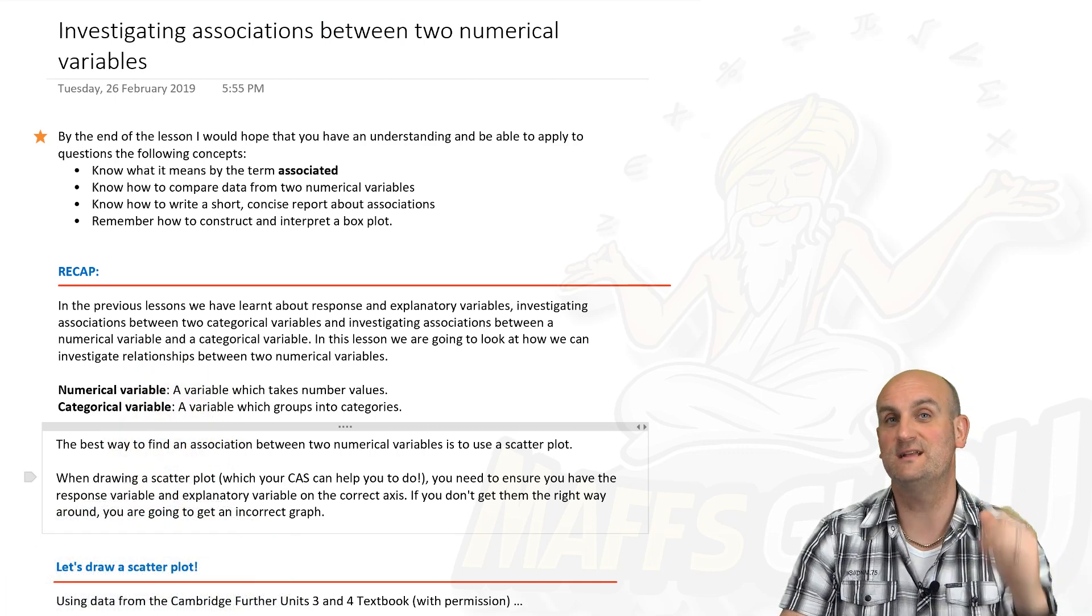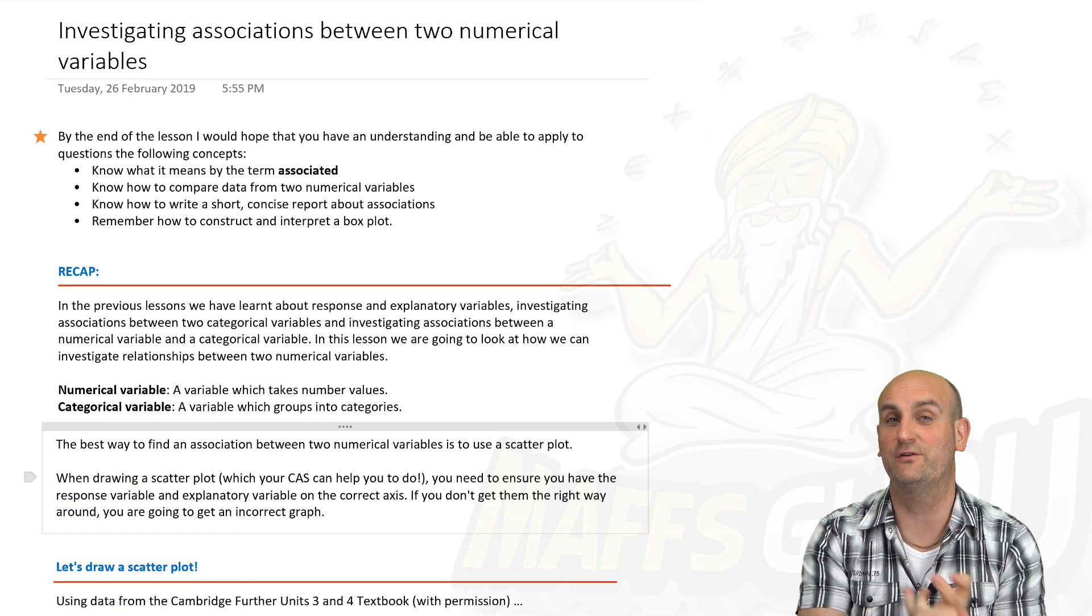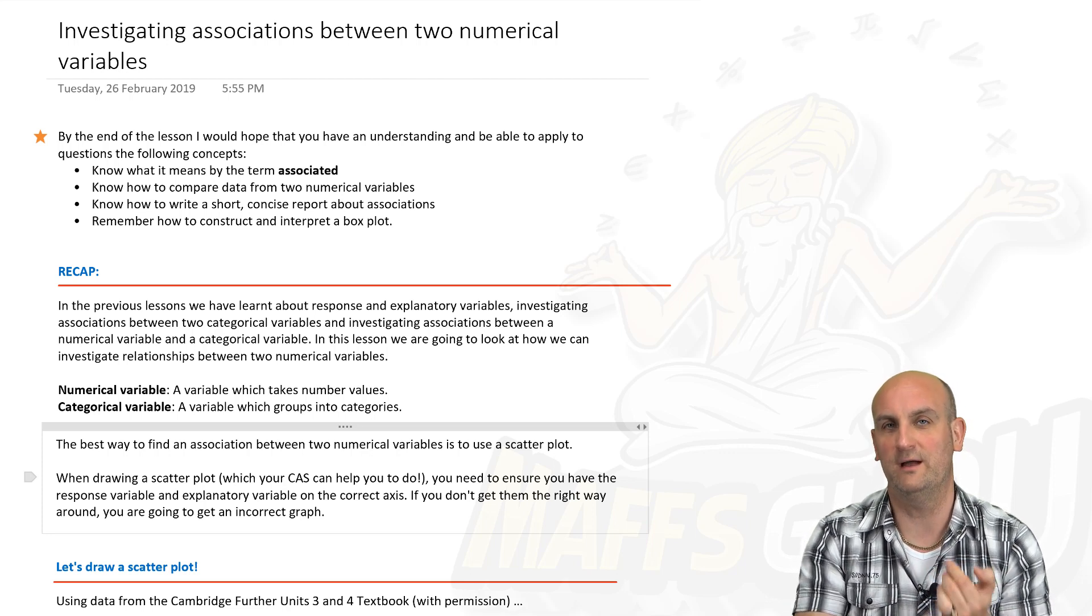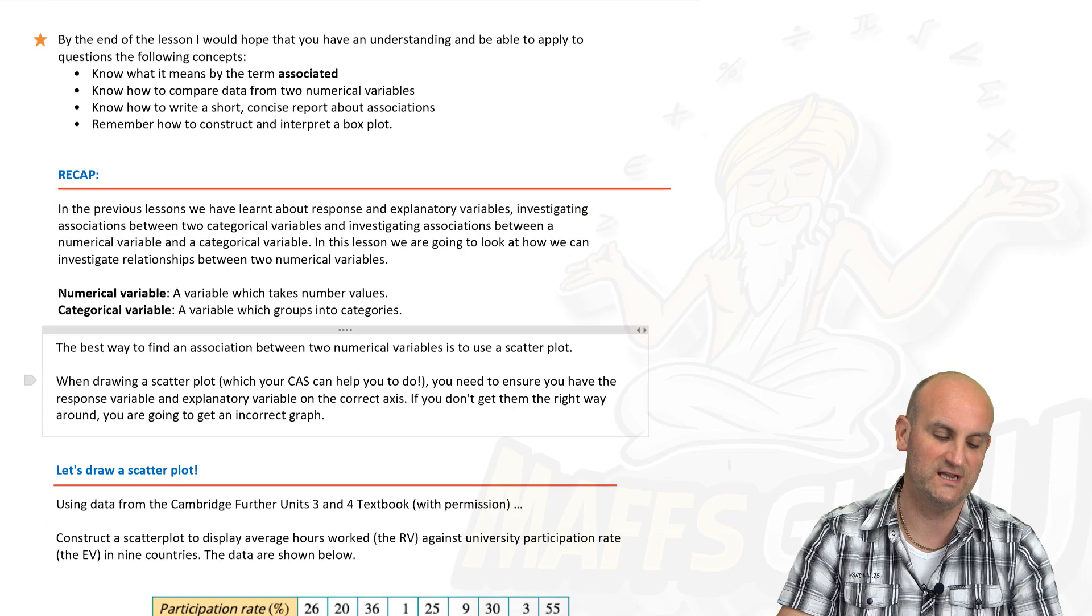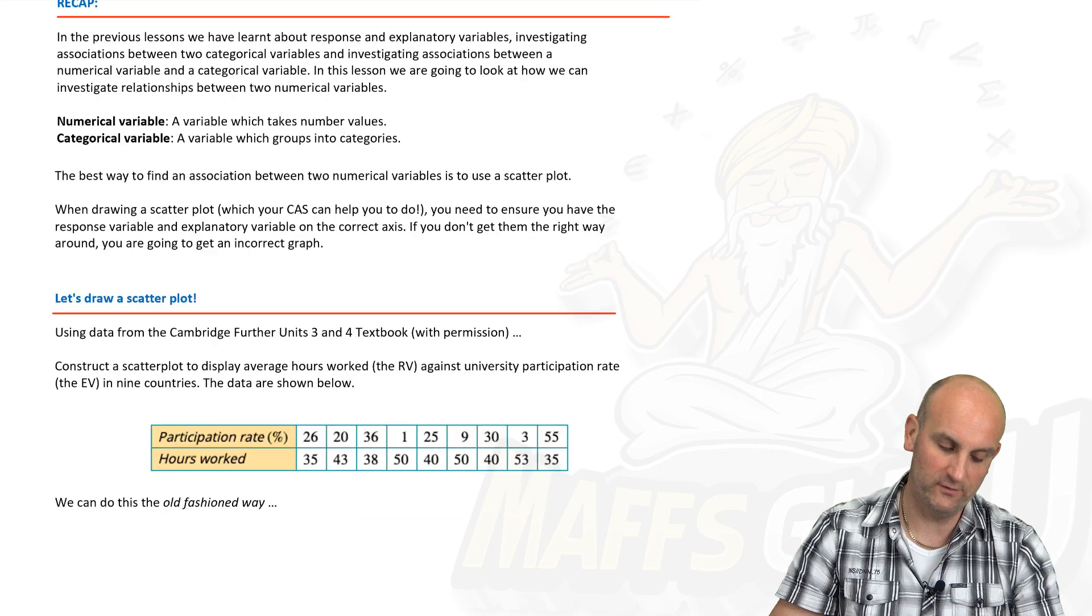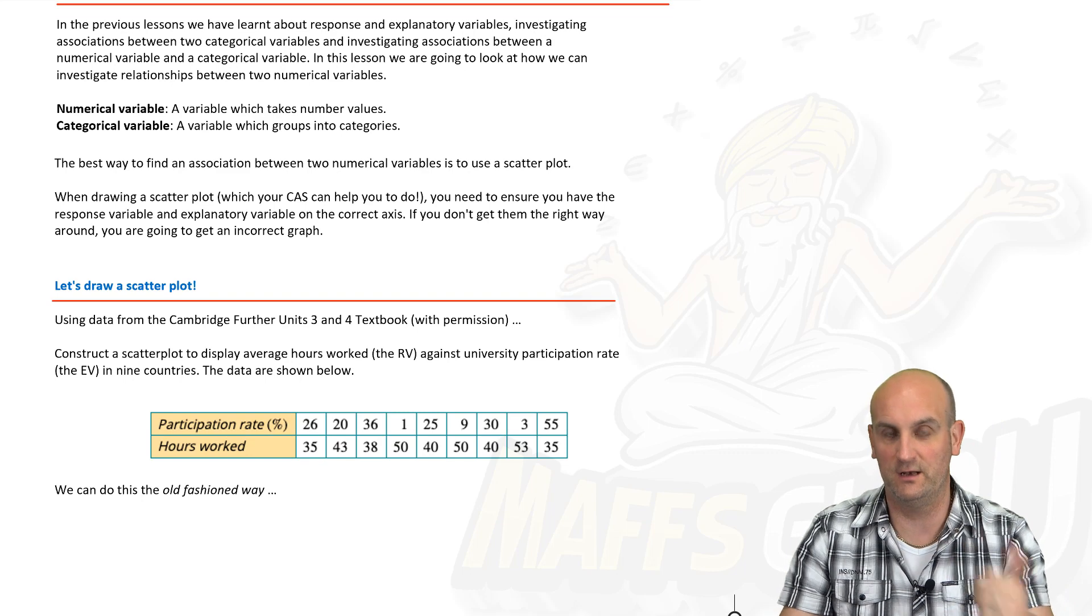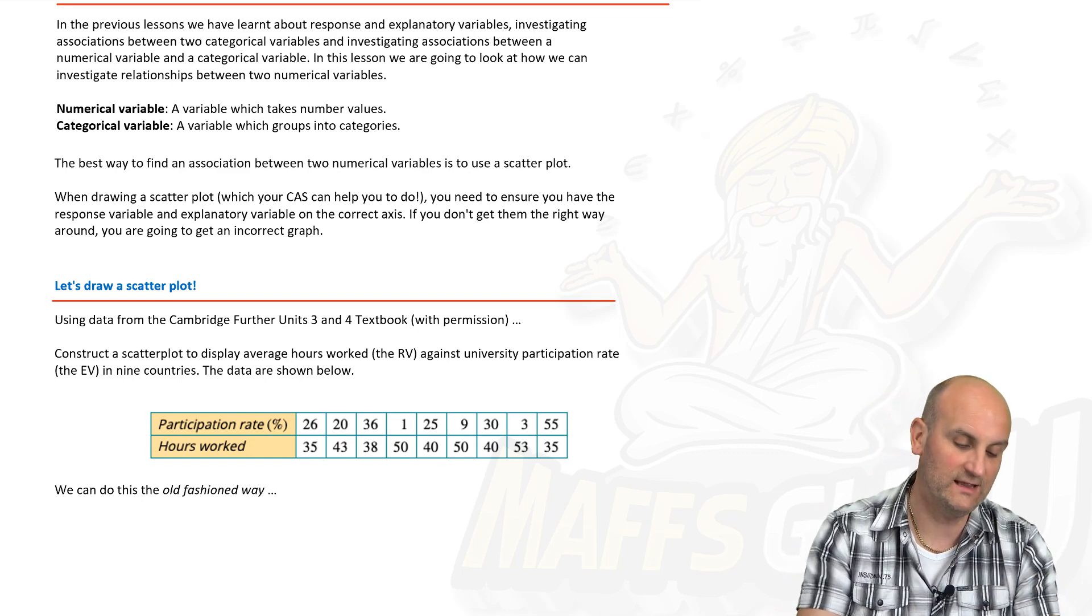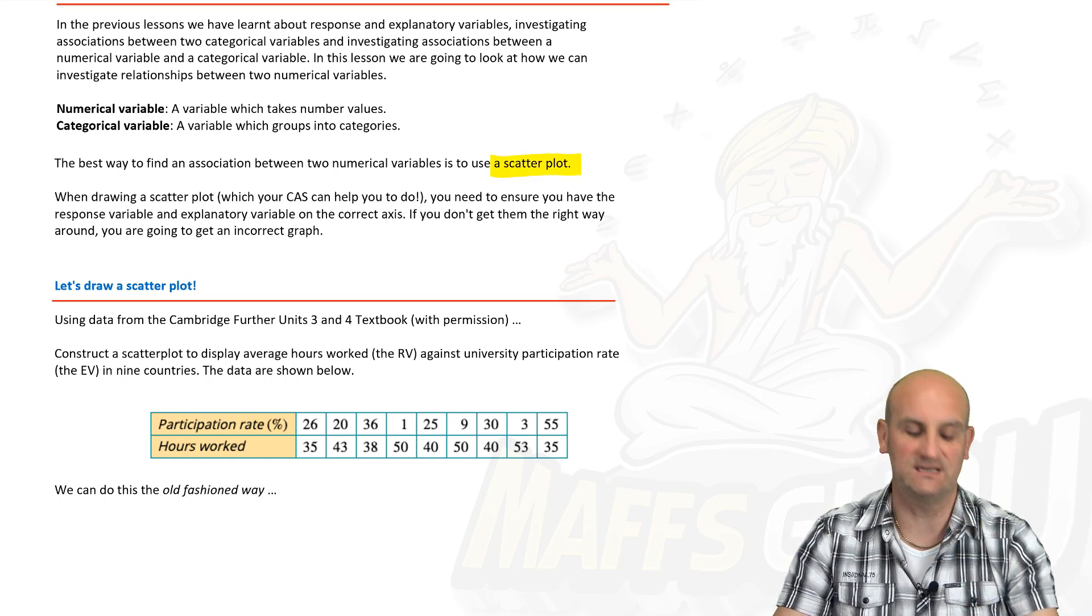Now in a previous lesson or previous lessons we've looked at explanatory and response variables, we looked at how to do categorical and categorical data to compare categorical and numerical, and now we're going to do numerical and numerical. By the end of the lesson hopefully you'll know what the term associated is and how to identify numerical data. If you remember, numerical variables are those that take number values and number value only. The best way to do this is if you want to associate between a numerical value and a numerical value, use a scatter plot.